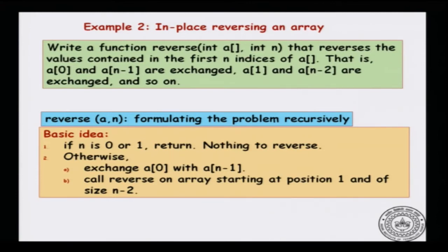The basic idea of the recursive solution to in-place reversal is the following. If n is 0 or 1 — if the array is either empty or contains exactly one element — then we do not need to do anything to reverse the array. Otherwise, it contains at least two elements. In this case, exchange a[0] with a[n-1]. That will be the first step. Now call the subproblem: we have to reverse the subarray from a[1] through a[n-2]. In the case of reversal, it is still linear recursion in the sense that there is only one call to a subproblem.